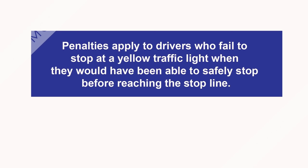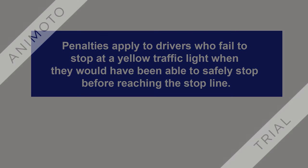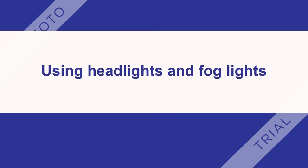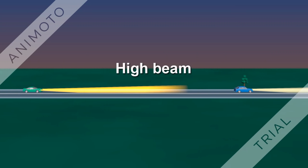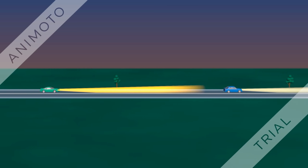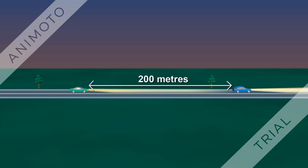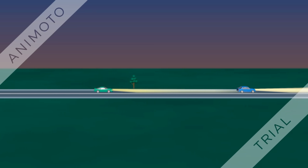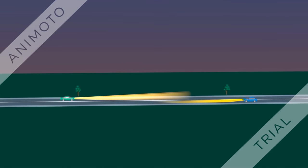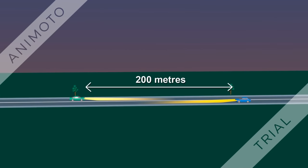Using headlights and fog lights: you must not use your headlights on high beam if traveling less than 200 meters behind a vehicle traveling in the same direction, or when less than 200 meters from an oncoming vehicle. It is an offense to flash your headlights unless the vehicle is being used to respond to an emergency.